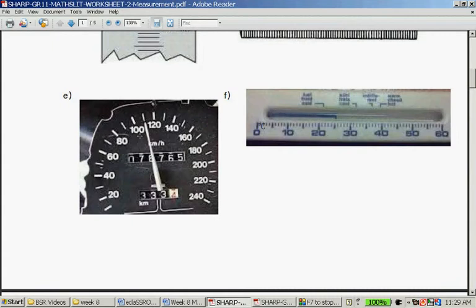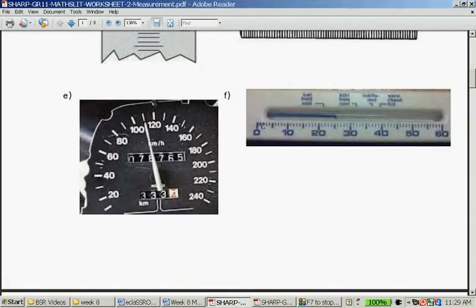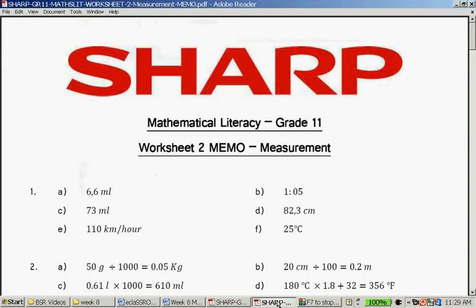Question E, it is 110 kilometers per hour. This is a wonderful exercise. And this is a degree Celsius, you see there. So, it's 25, 25 degrees Celsius.